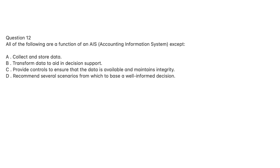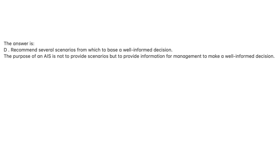Question 12. All of the following are a function of an AIS, accounting information system, except: A. Collect and store data. B. Transform data to aid in decision support. C. Provide controls to ensure that the data is available and maintains integrity. D. Recommend several scenarios from which to base a well-informed decision. The answer is D. The purpose of an AIS is not to provide scenarios but to provide information for management to make a well-informed decision.